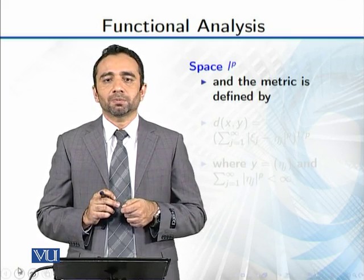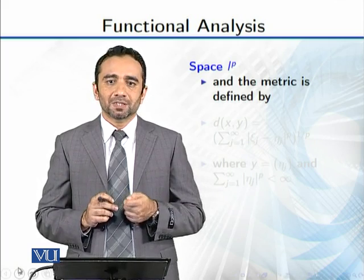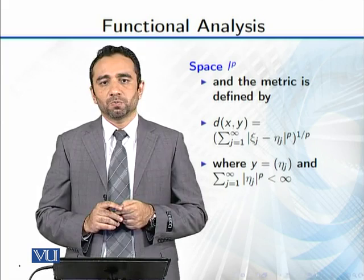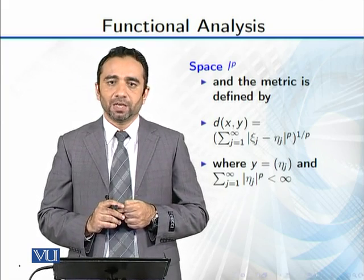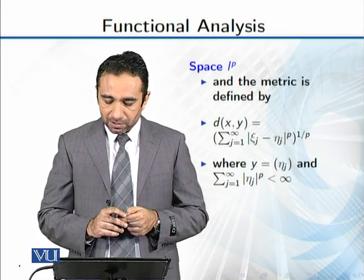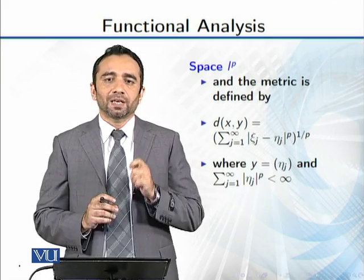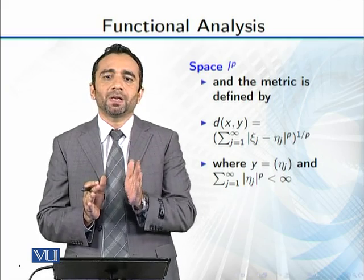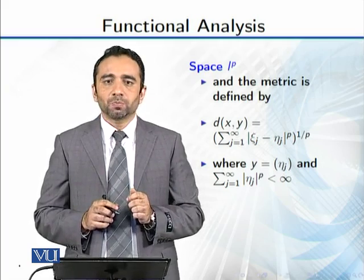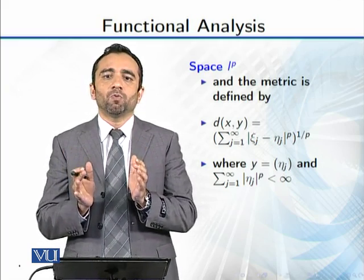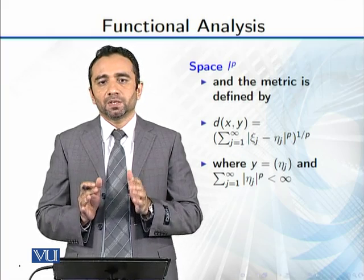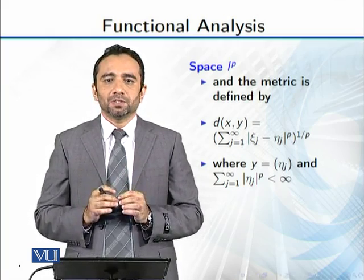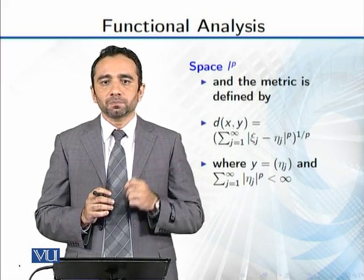Then you need a distance function. The distance function is defined by d(x,y). You have a sequence x and a sequence y. Y we have named η_j and x you have named ξ_j. So the distance of x,y equals: we are taking |ξ_1 - η_1|, |ξ_2 - η_2|, they have power p. That is in summation form: (Σ|ξ_j - η_j|^p)^(1/p). With this distance function, this set forms a metric space.